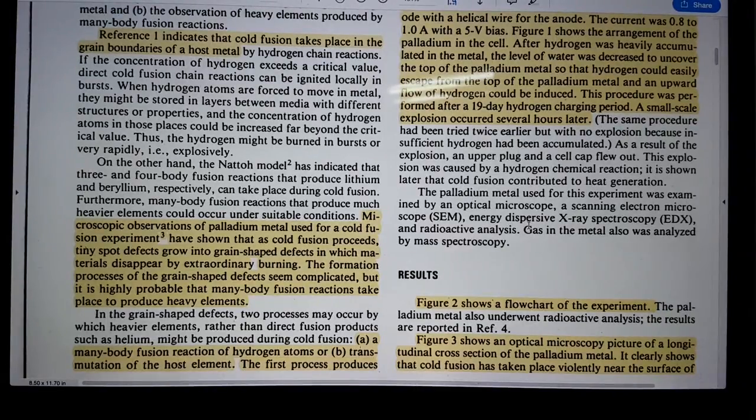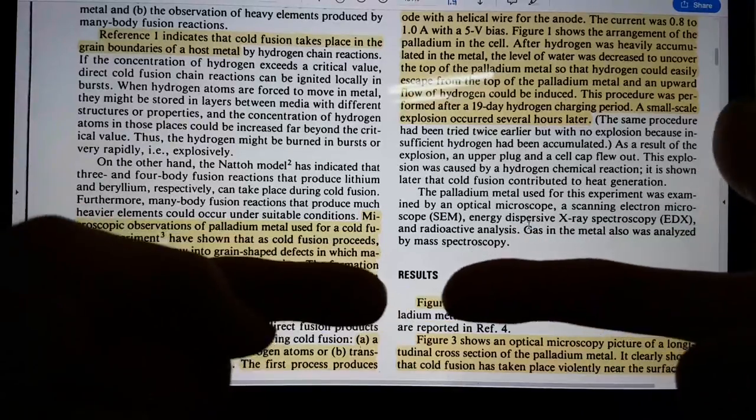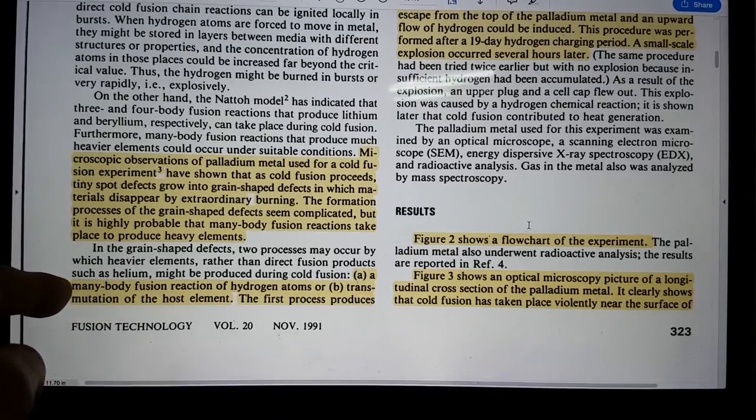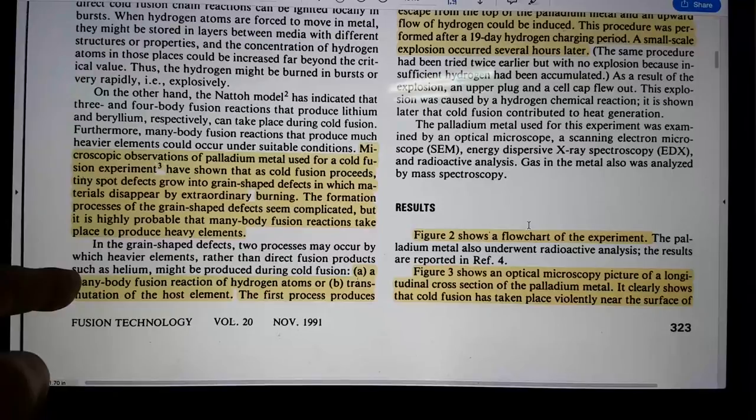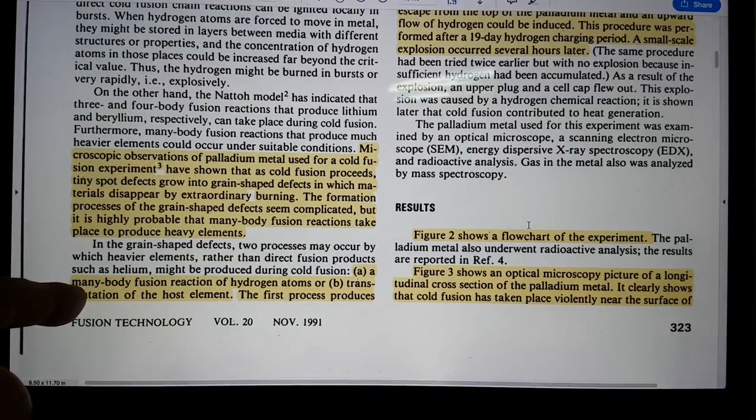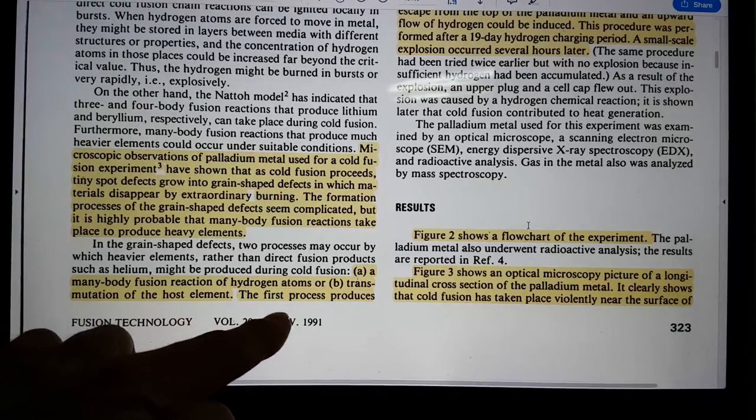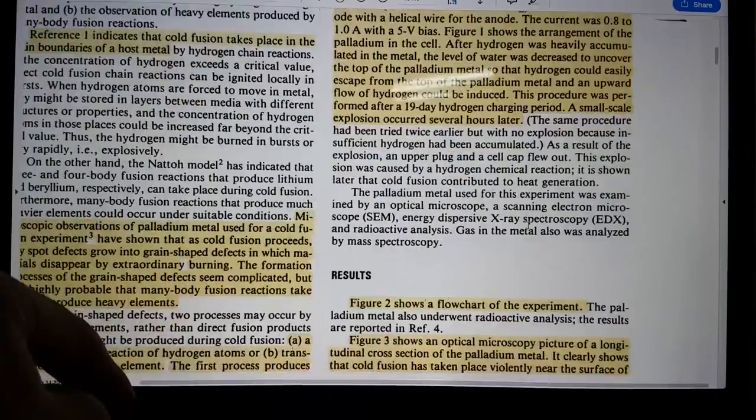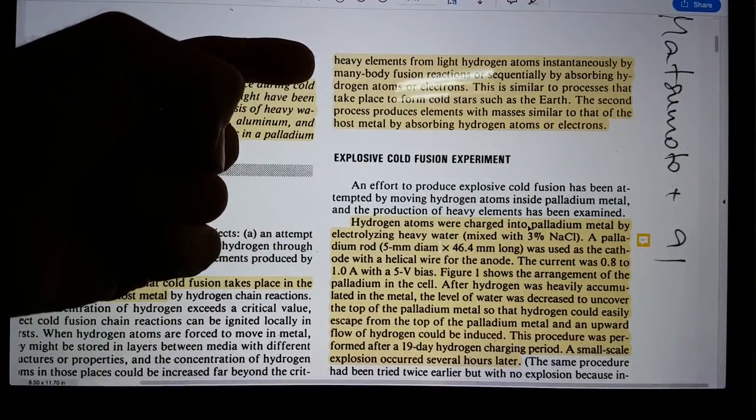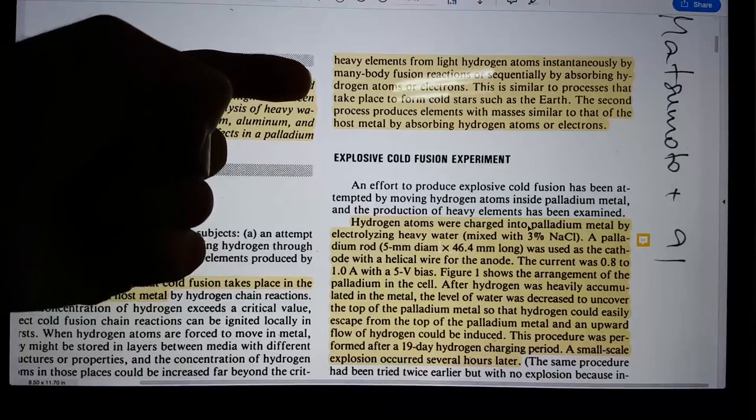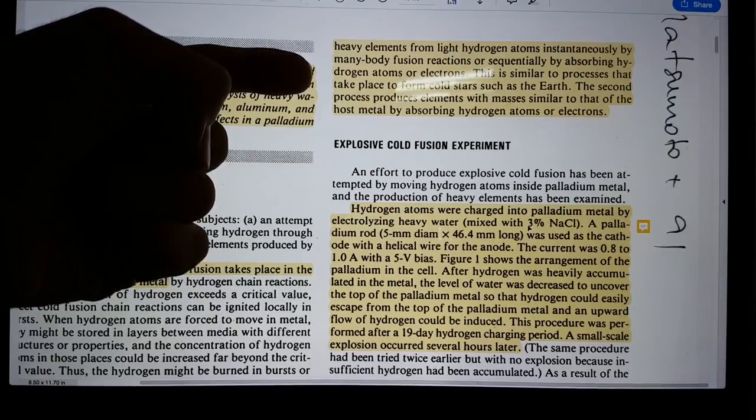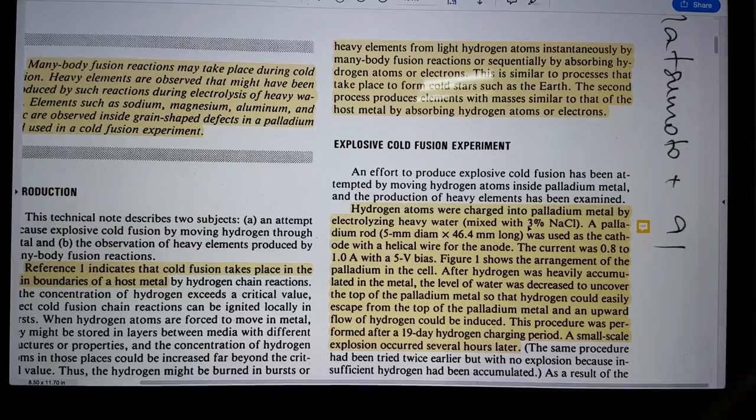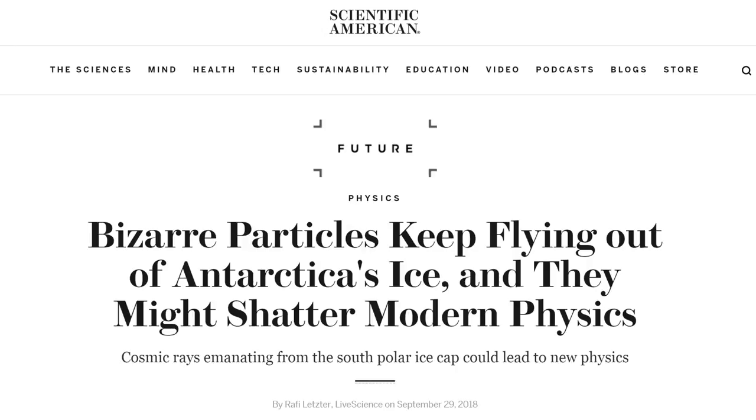So a normal fusion, let's say you have deuterium and a tritium, you're firing those at very high velocity to each other, and it's a two-body problem. This is not, in my opinion, a two-body problem necessarily. He goes on and saying, in the grain-shaped defects, two processes may occur by which heavier elements rather than direct fusion products such as helium might be produced during cold fusion. A many-body fusion reaction of hydrogen atoms or transmutation of the host element. Transmutation is basically going both ways. So the first process produces heavy elements from light hydrogen atoms instantaneously by many-body fusion reactions or sequentially by absorbing hydrogen atoms or electrons. This is similar to processes that take place to form cold stars such as the Earth. Now this is a really insightful observation, I don't know why he said this, but it is really insightful given the recent findings of particles that are unexplained coming out from Antarctica.